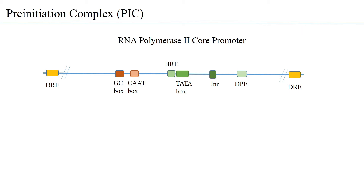The pre-initiation complex formation requires several different general transcription factors, and these general transcription factors come and bind to the core promoter region sequentially to enable formation of the pre-initiation complex.